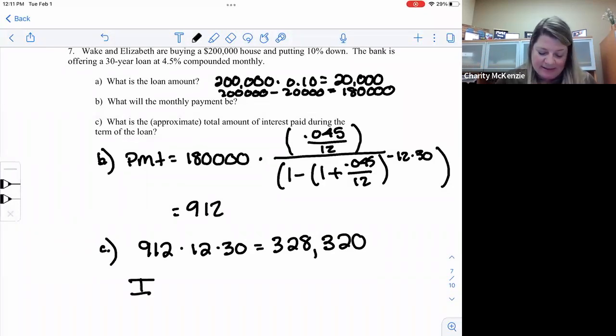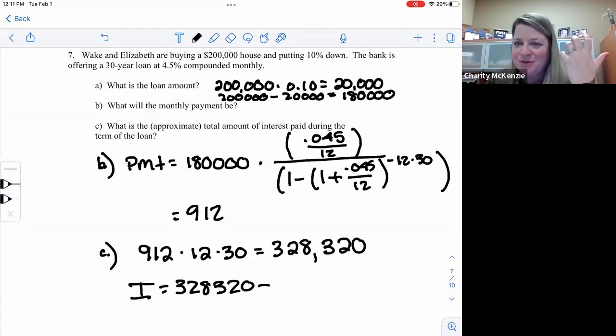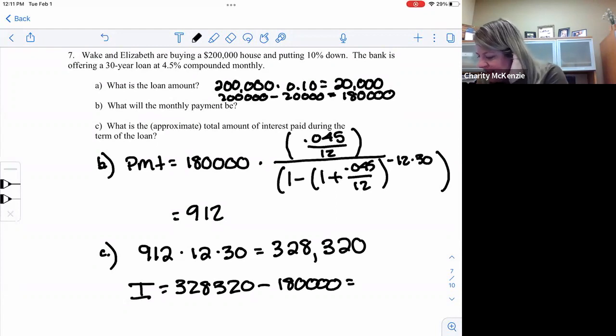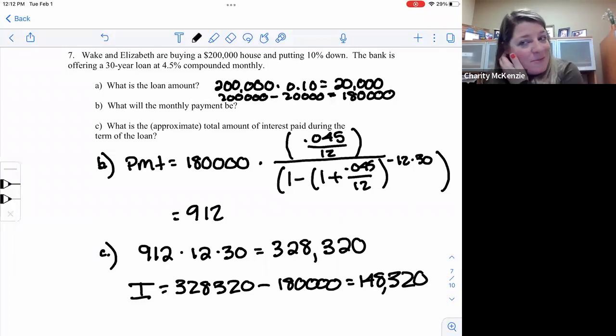So 912 times 12 times 30 is $328,320. So my interest is going to equal the number we just came up with minus what I actually financed, not the 200,000 because we didn't pay interest on the 20,000. So minus 180,000 is $148,320. That's how much interest. Most people don't realize you pay about double for your house. So if you buy a half a million dollar house, you'll pay a million dollars for that home. Crazy. I know.